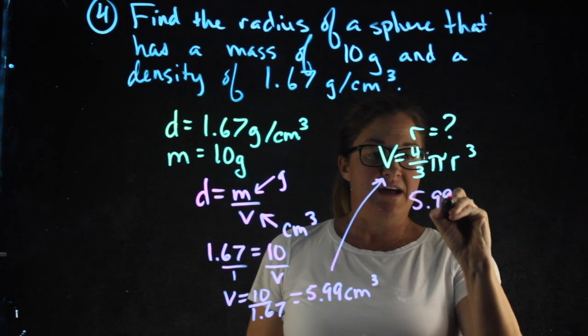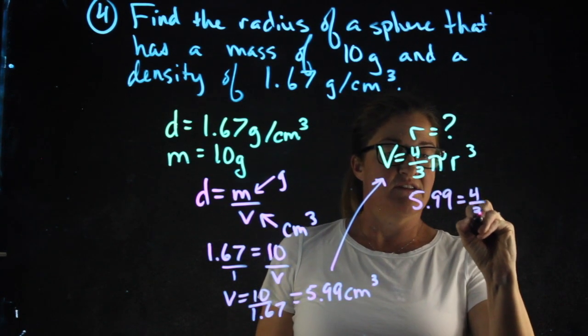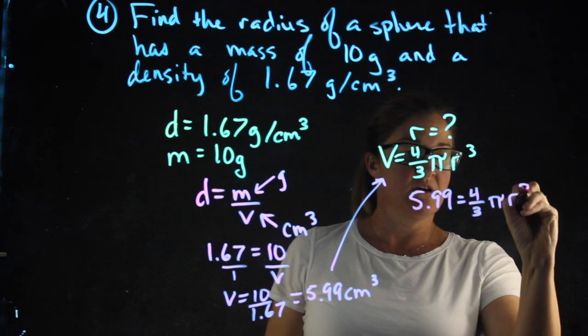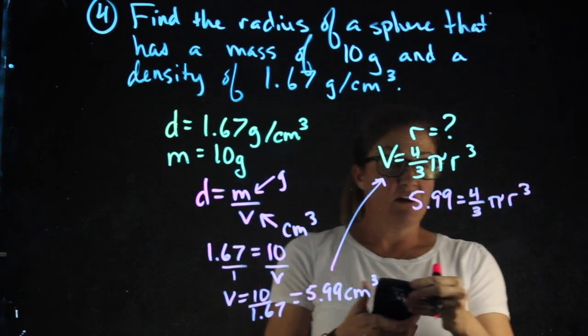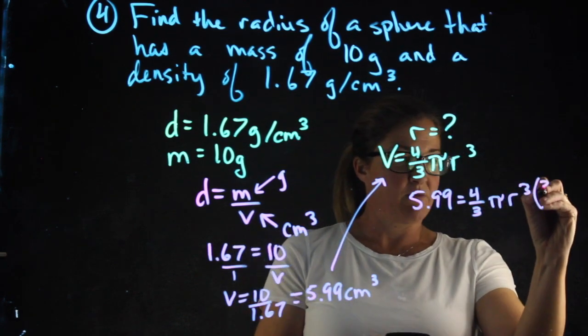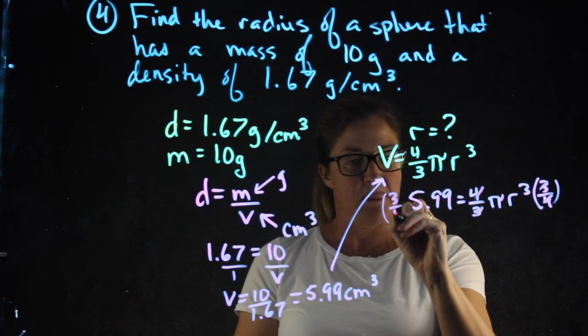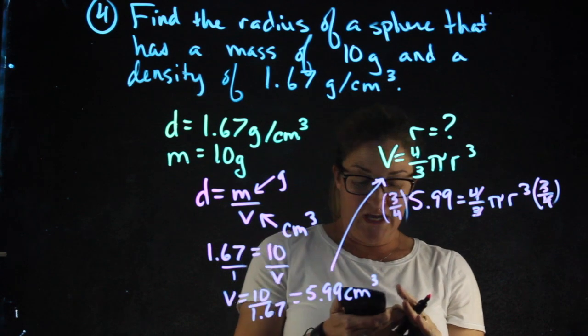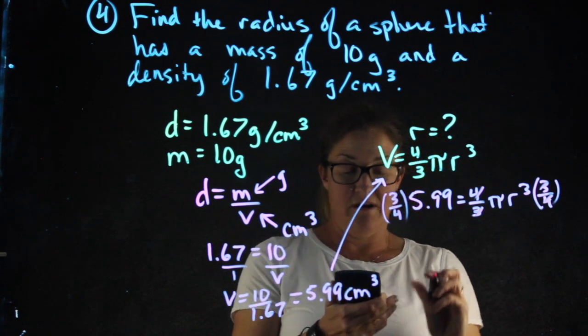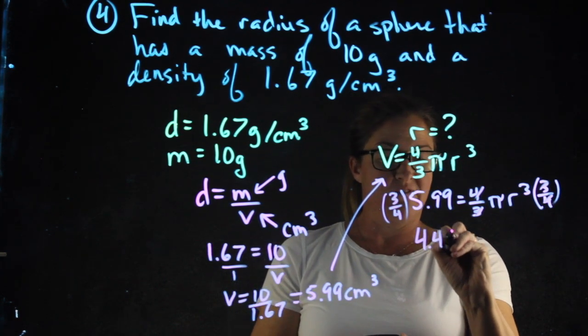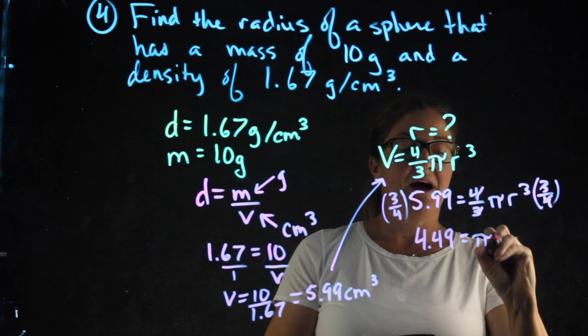This gives me 5.99 equals 4 thirds pi r cubed. Now in my calculator, I'm going to multiply each side by 3 fourths.